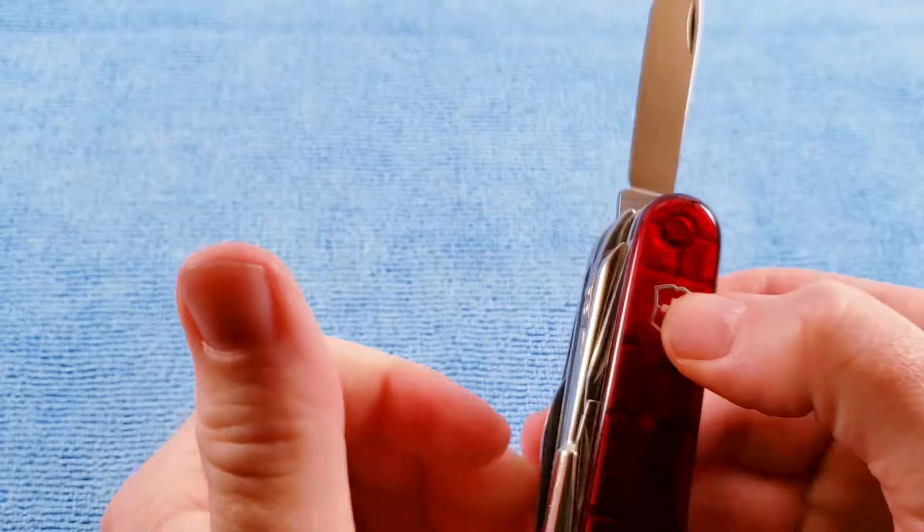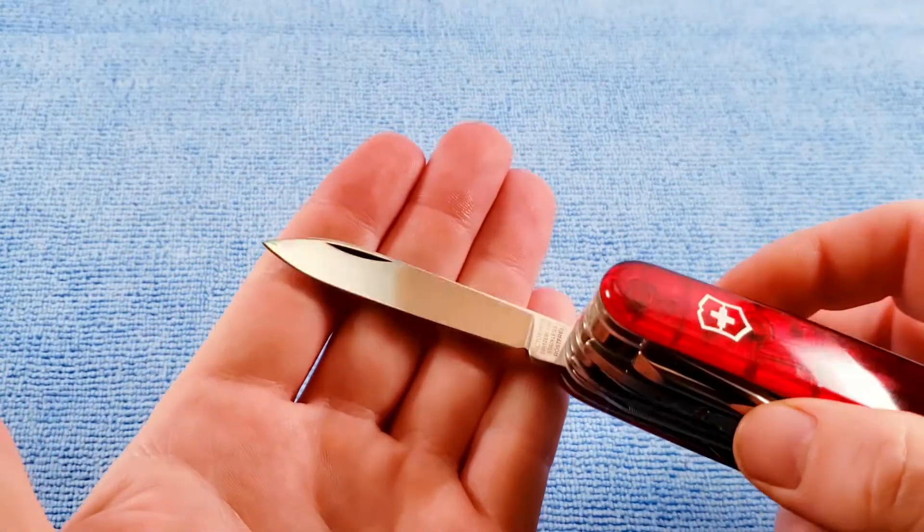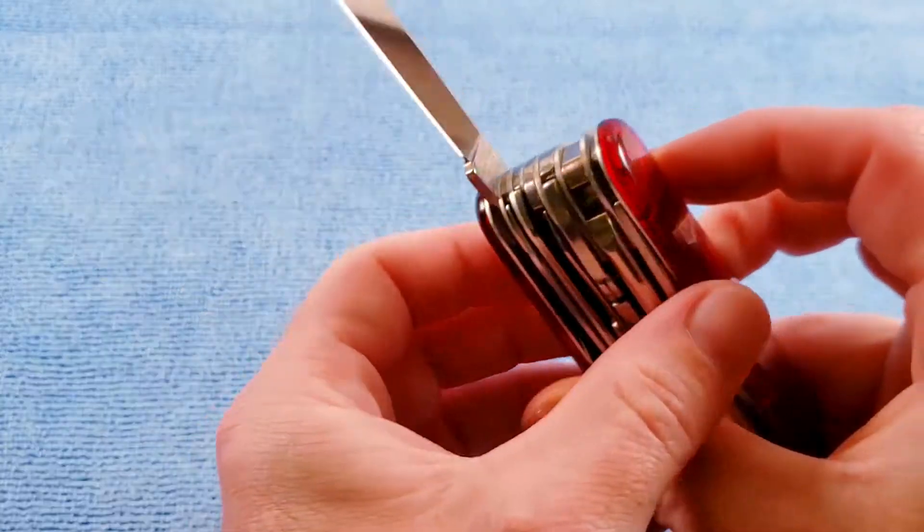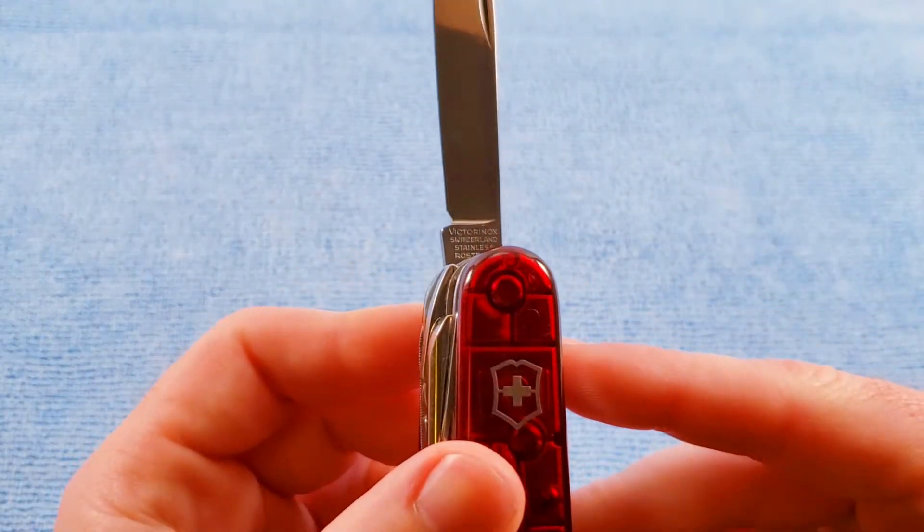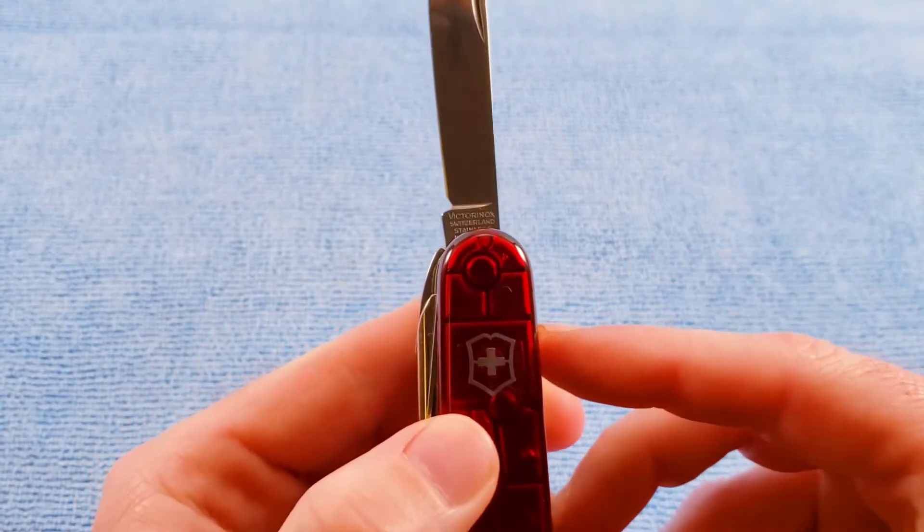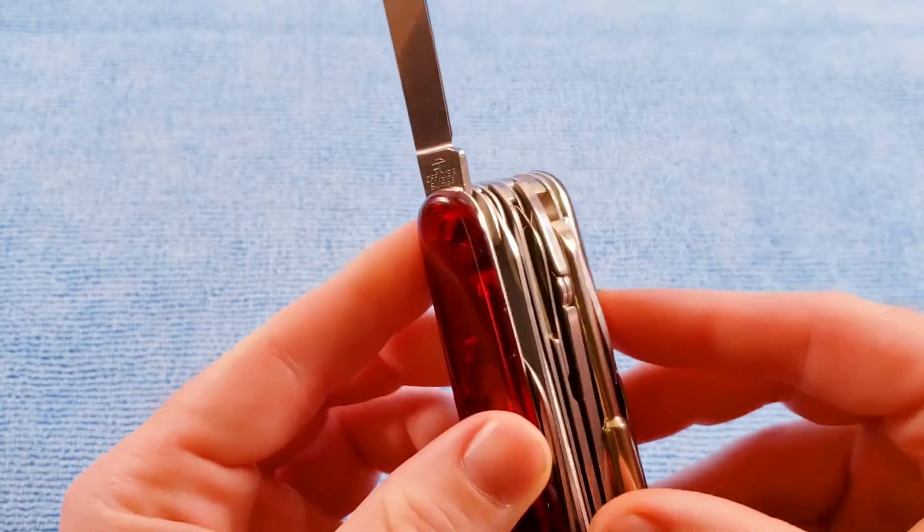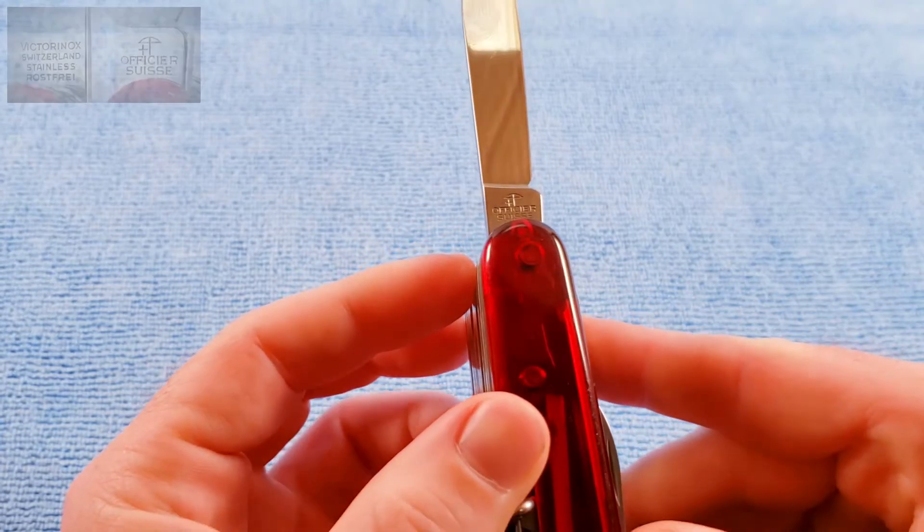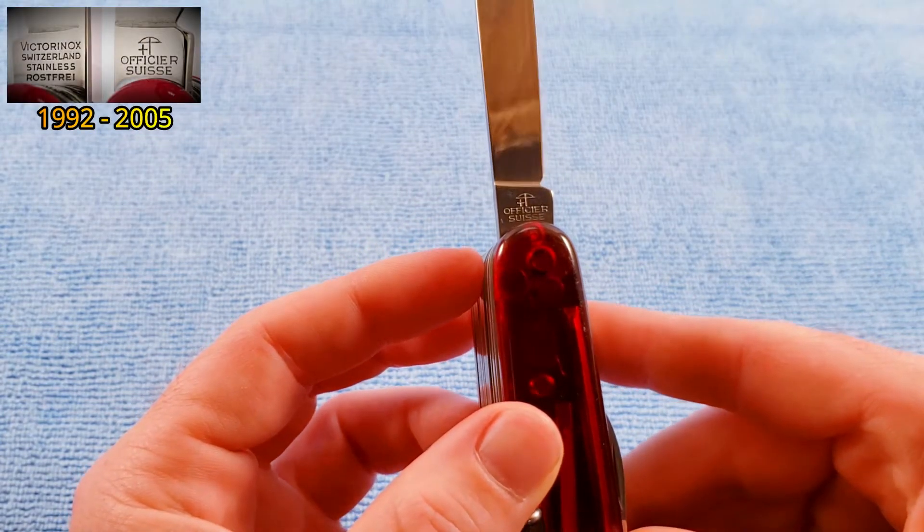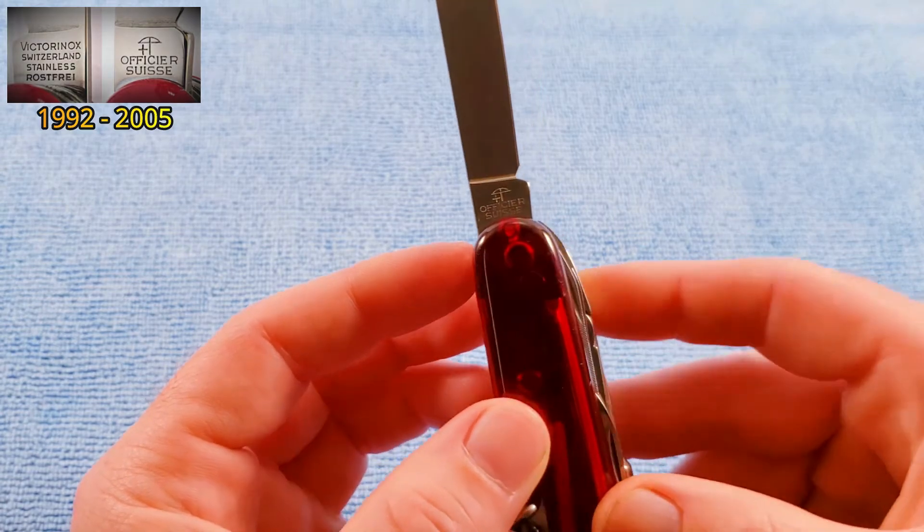We get the standard main blade. And for tank stamp, we get Victorinox, Switzerland stainless Ross Fry. We take note that we have the large V. We get the Officer Suisse bow and arrow with a plus sign that does not touch. This tank stamp ran from 1992 to 2005.